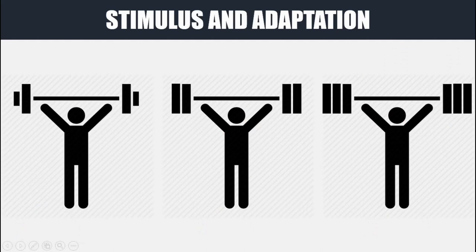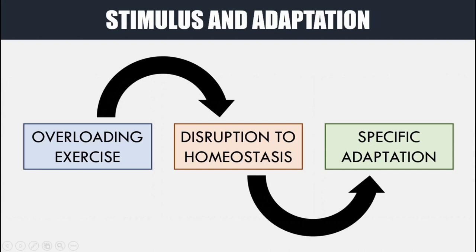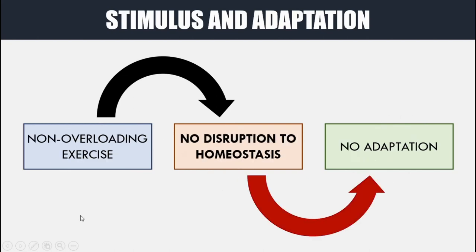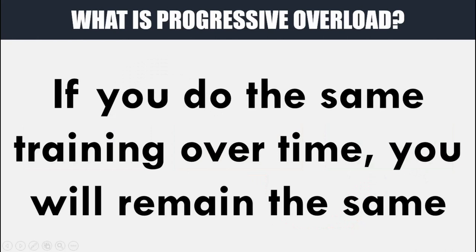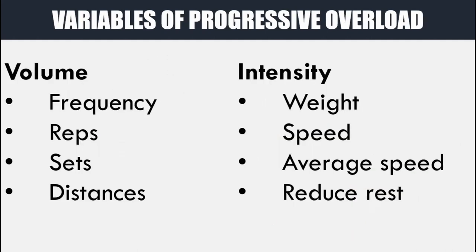The growing cow was the stimulus and the adaptation was him getting stronger and being able to continue to carry this cow. In modern strength and conditioning we essentially do the same thing but we have standardized measures — for example, in strength training our stimulus is a bar with weights on the end and we quantify how much this weight is and increase it over time. The reason we need to apply progressive overload is because an overloading exercise disrupts homeostasis, and that disruption causes a specific adaptation. If we do an exercise that doesn't present any overload, we have no disruption to homeostasis and therefore no adaptation — simply put, if you do the same training over time you will remain the same.